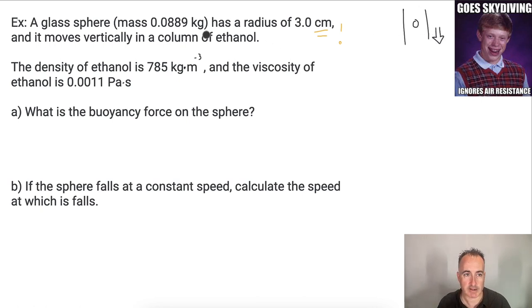And we've got some facts here. We're told the density of ethanol is 785 kilograms per meter cubed. We've got the viscosity of ethanol is 0.0011 pascal seconds. The first question is asking, what is the buoyancy force on the sphere?